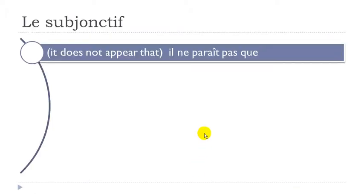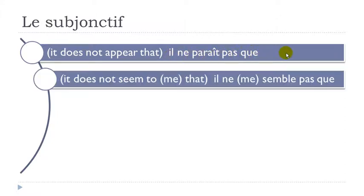The first structure is: Il ne paraît pas que. Next: Il ne me semble pas que. We use 'me' here because it is possible to put someone else — il ne te semble pas, il ne lui semble pas, etc.